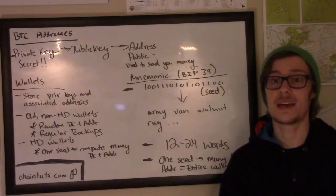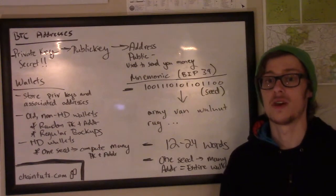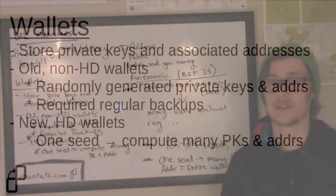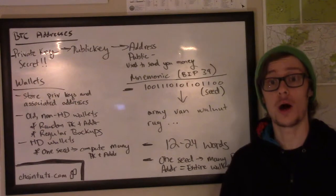Now in the early days of Bitcoin, these private keys and associated addresses were derived what we call non-deterministically. Every private key was just randomly generated and the associated public key was computed from that, but there was no sort of pattern to how these addresses were derived.